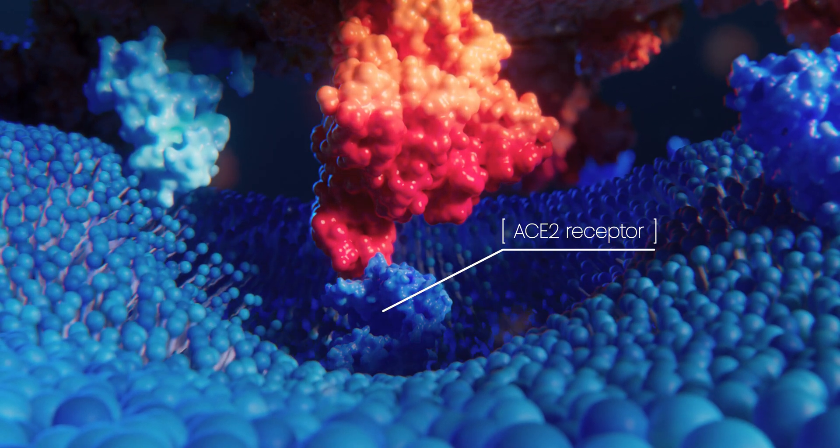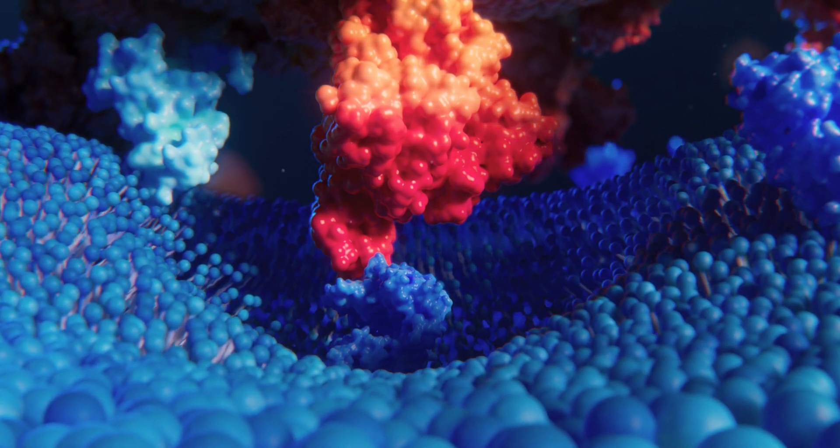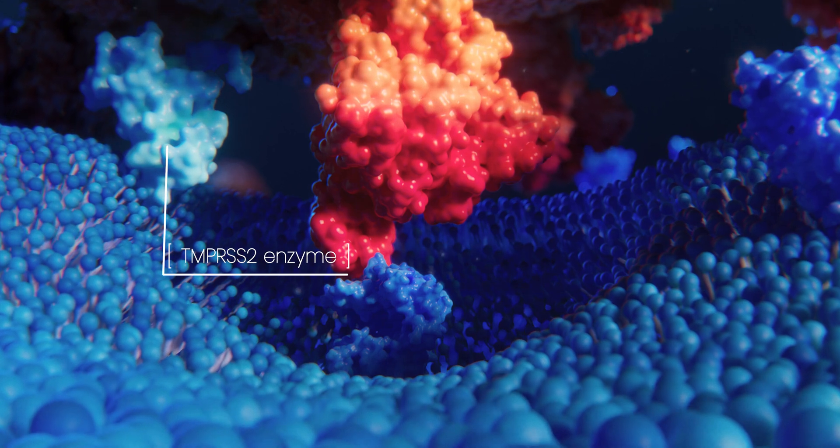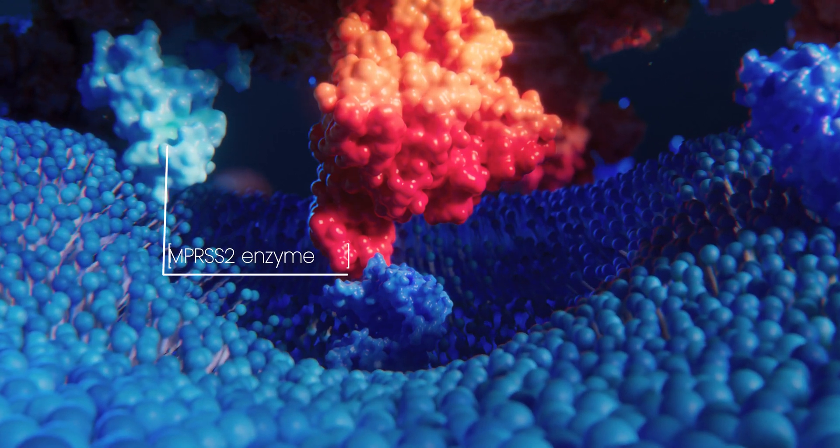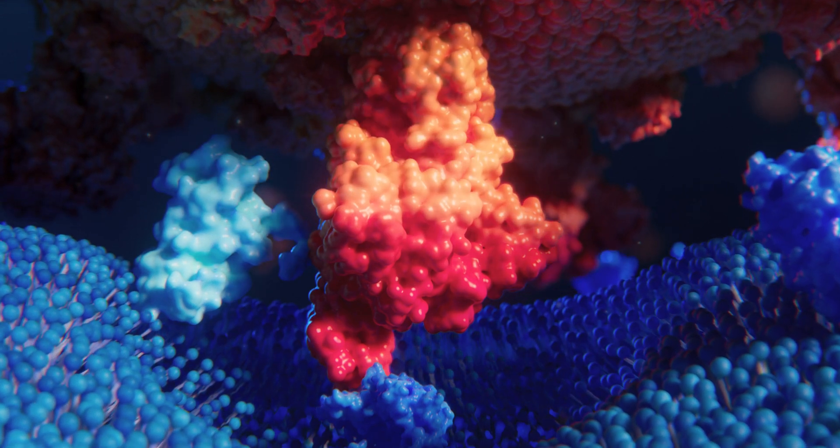Once the connection between the virus and the receptor has been established, the human body activates the TMPRSS2 enzyme. This is a protein-cutting enzyme that proceeds to cut off the head of the spike protein.